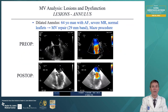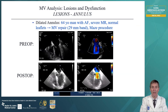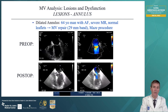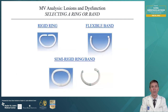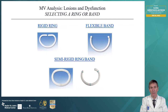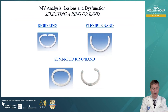Here's a case of a dilated annulus — a 64-year-old man with atrial fibrillation, severe mitral regurgitation, and normal leaflets. He underwent simple mitral valve repair with a downsizing band and a maze procedure, which completely eliminated his mitral regurgitation as seen in the post-operative images. When you do a mitral valve repair, it's generally accepted that some sort of buttressing support should be done to prevent annular dilatation in the future. This can involve a rigid ring, a flexible band, or semi-rigid rings and bands.